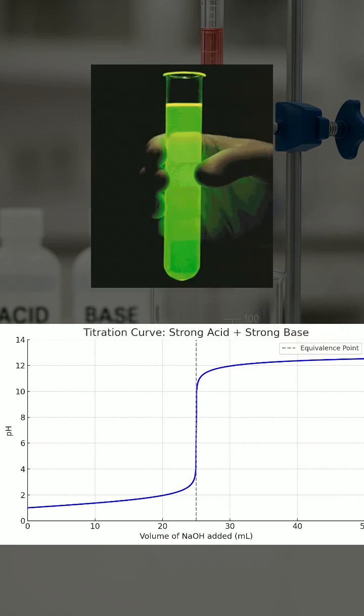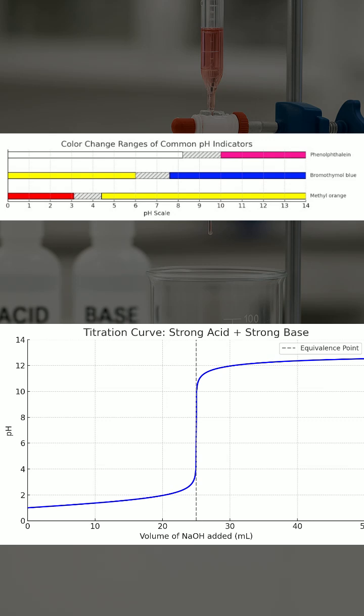Finally, you may also be asked about the appropriate pH indicator to use. Since the equivalence point is at pH 7, you'd choose an indicator that changes color around neutral, such as bromothymol blue.